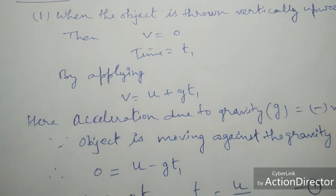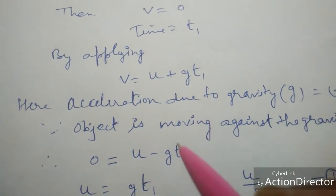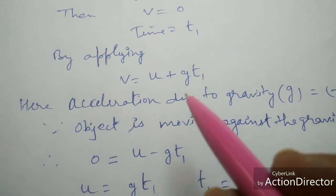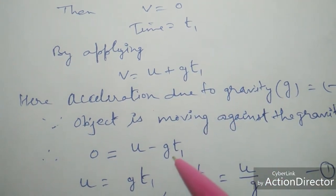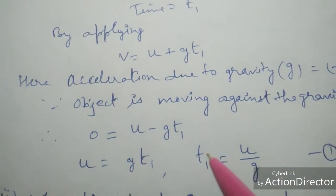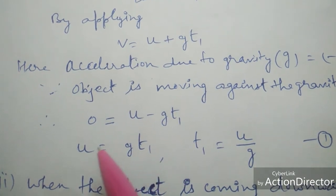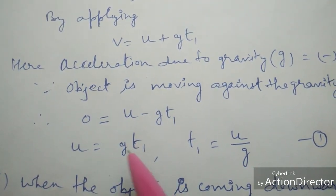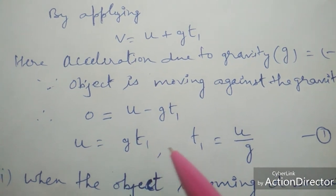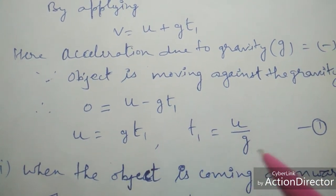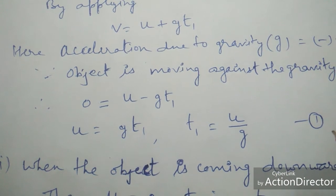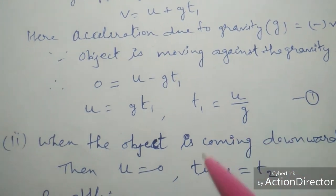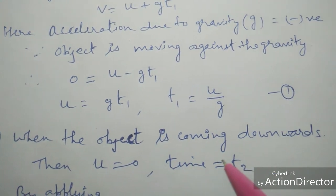When an object goes against gravity, its value is negative. So putting these values: v = 0, so 0 = u + (−g)·t1. Solving this, g·t1 = u, therefore t1 = u/g. This is the first case when the object is going upward.